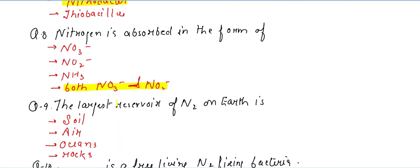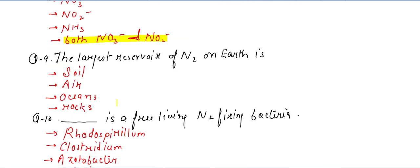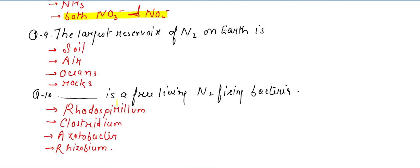The next question: what is the largest reservoir of nitrogen on earth? Options: soil, air, oceans, or rocks. The answer is air — nitrogen is present in the air, making air the largest reservoir of nitrogen on earth.